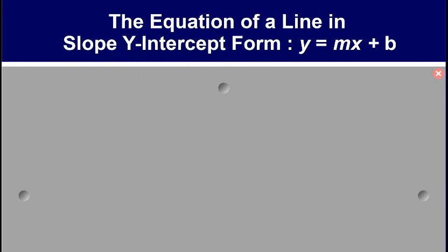Today we're going to be talking about how to write the equation of a line in slope y-intercept form, otherwise known as y equals mx plus b. This is not new to you. In the previous unit this would often be described as the partial variation equation template, where m is the rate of change or slope and b is the vertical intercept, initial value, or starting amount.